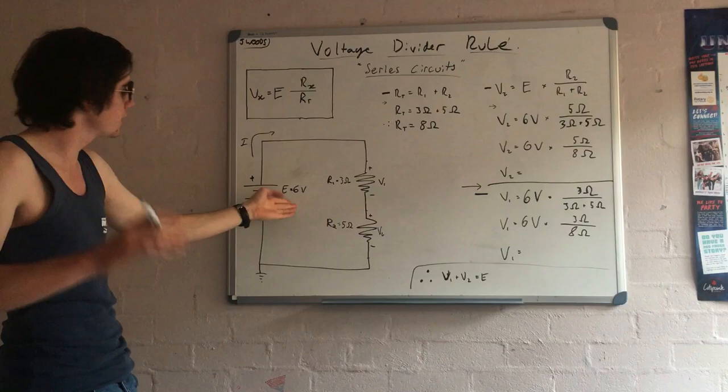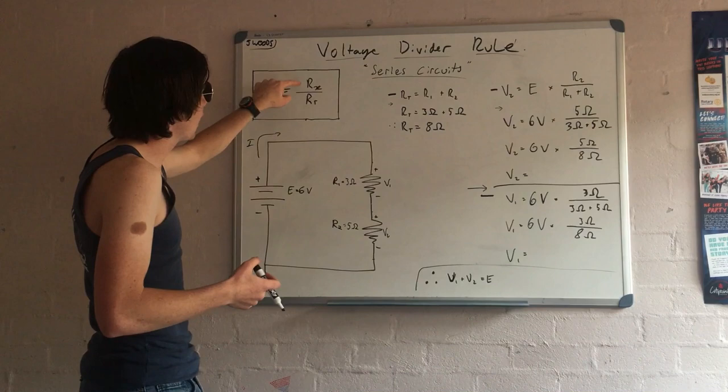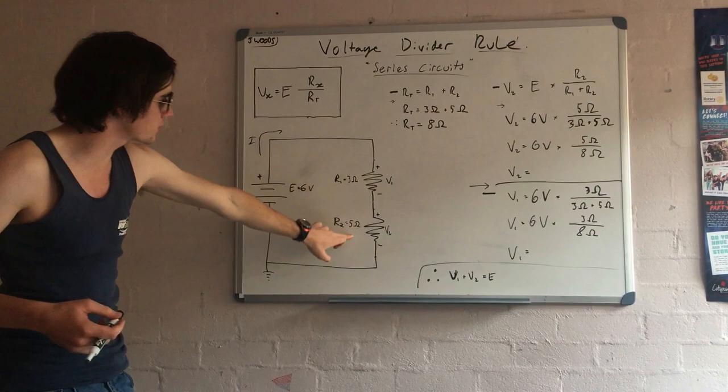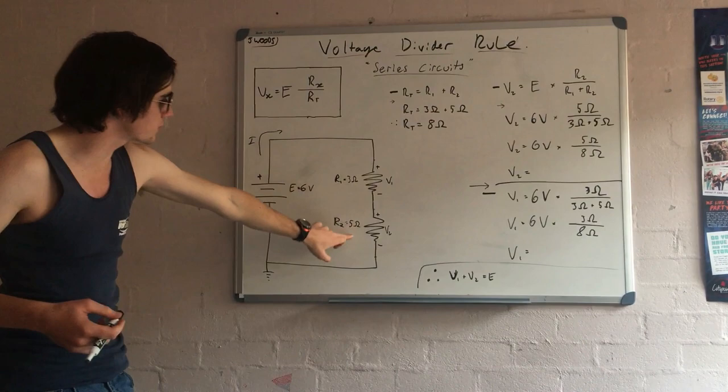E is your supply voltage, right? That's just like a constant. And then you've got Rx. Rx is the resistor values, right? In our case, it's 3 ohms and 5 ohms.